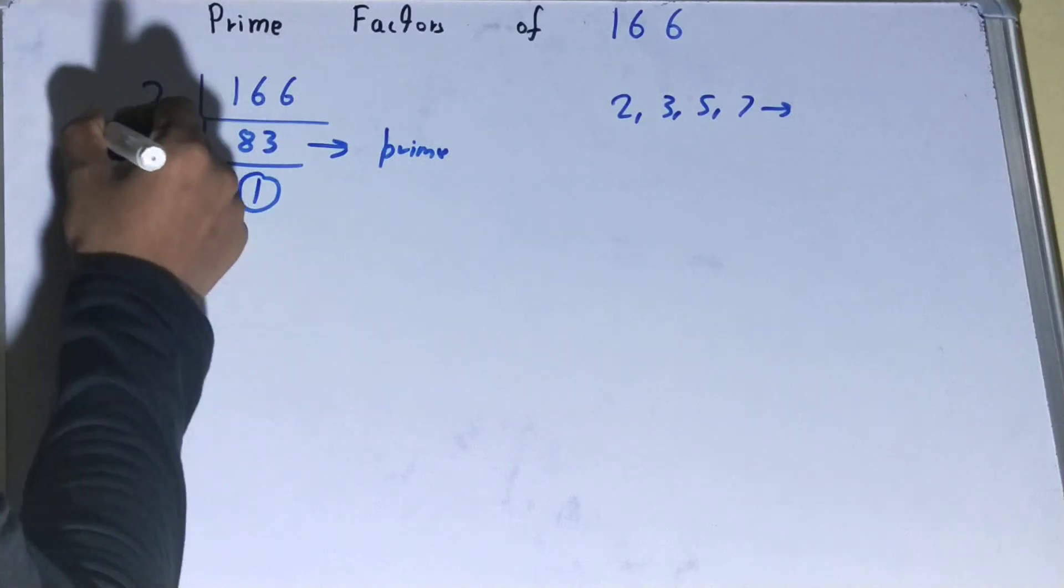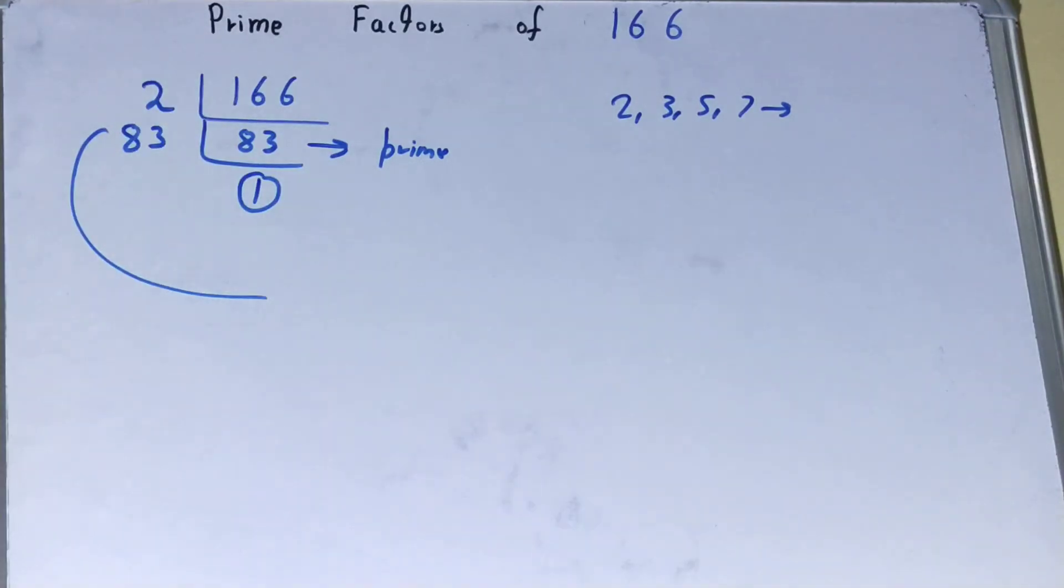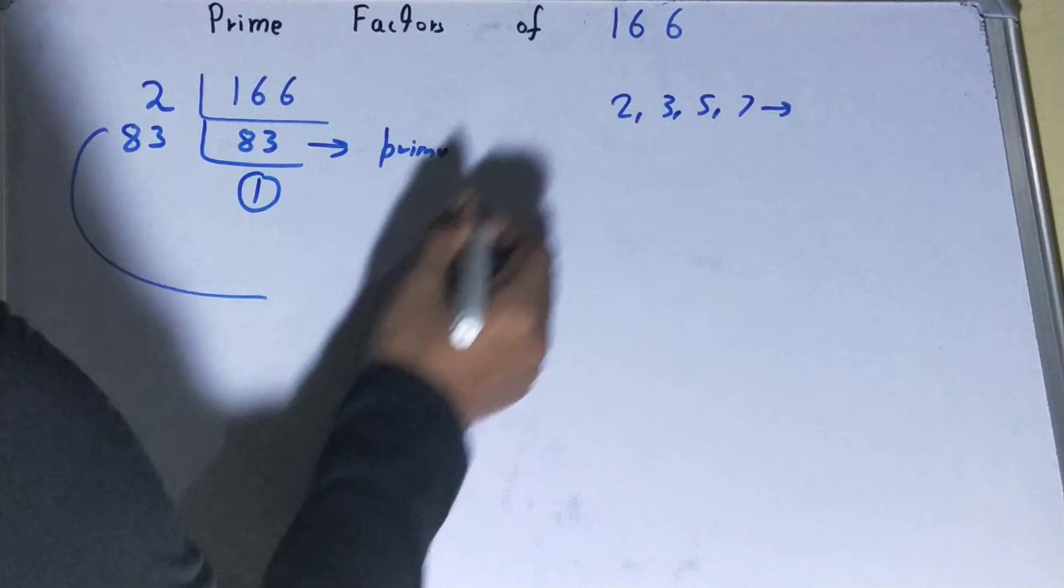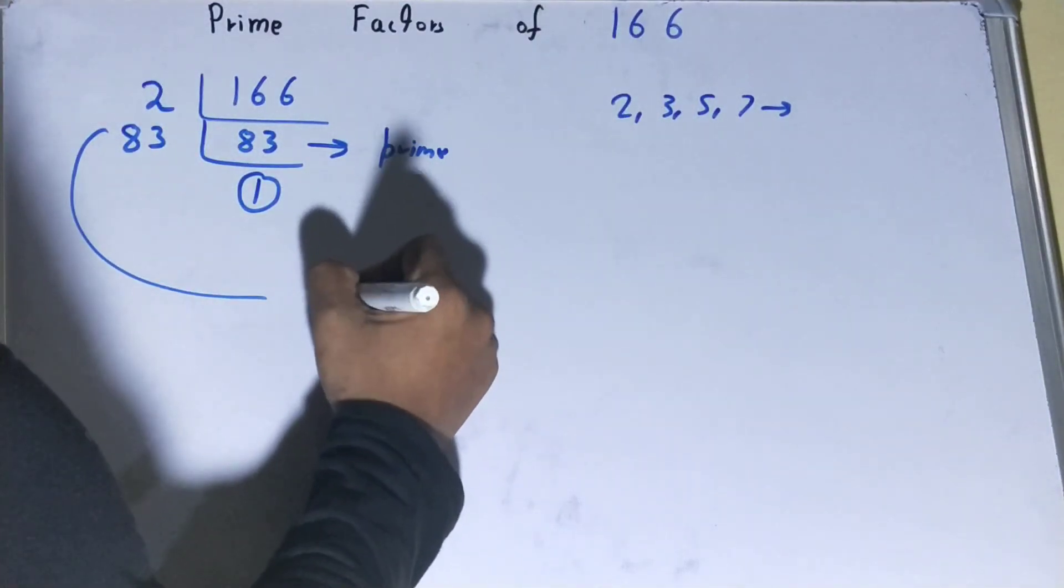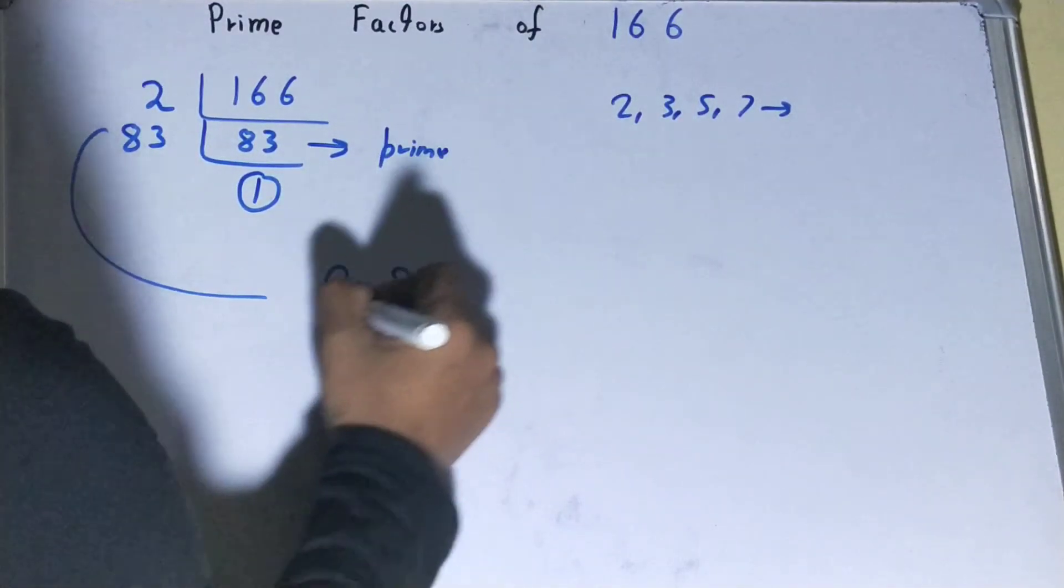Once you get 1, the work is done. Whatever you have on the left hand side will be the set of prime factors for 166, which is 2 × 83.